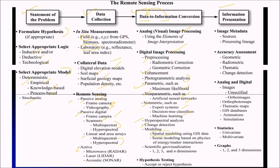Hyperspectral analysis can be done with change detection. Also the modeling, that is spatial modeling using GIS data. Or also scene modeling, which is based on the physics of energy matter interactions and the scientific geovisualization in number of dimensions.